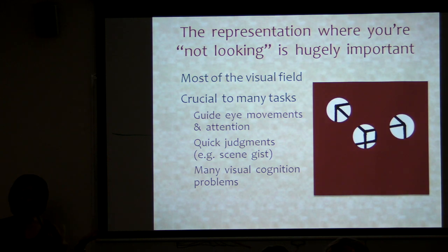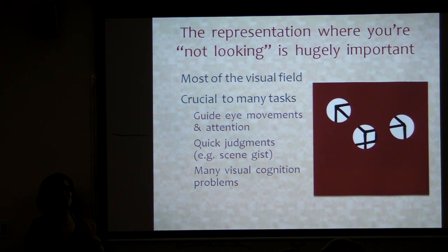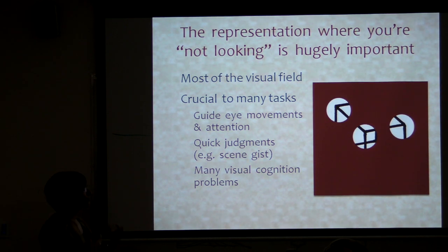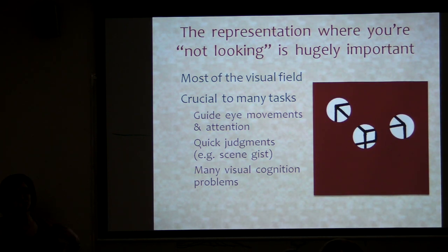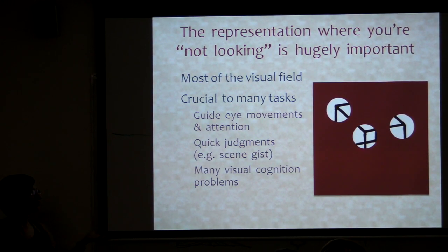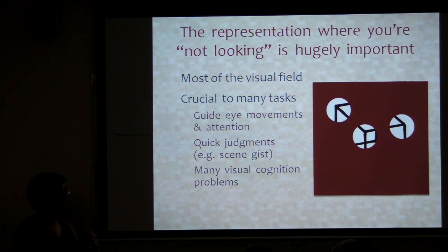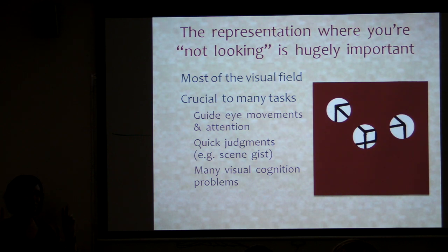Where your fovea isn't is a huge fraction of the visual field — by conservative estimates, like 99% of your visual field. And where you're not looking is crucial to many tasks. How are you ever going to decide where to move your eyes next to get more detail if you don't have useful information where you're not looking? We know that you can do a lot of things very quickly — I could flash a scene at you for 100 milliseconds and you'd know all sorts of stuff about the gist of that scene. So that implies you're getting an awful lot of information out of where you're supposedly not looking.